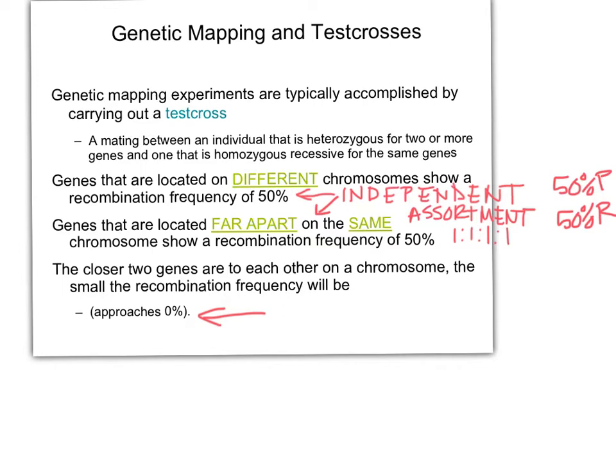We use a test cross, just like we did for looking at the chi-square analysis to see if there's linkage or not. In order to do mapping, first of all, it has to be linked. A lot of times you're going to have to do the statistics to figure out if it's linked or not. In other cases, you'll be told these are on the same chromosome — figure out the distances, the recombination frequencies. We'll always use a test cross because that helps us with what we expect to find.